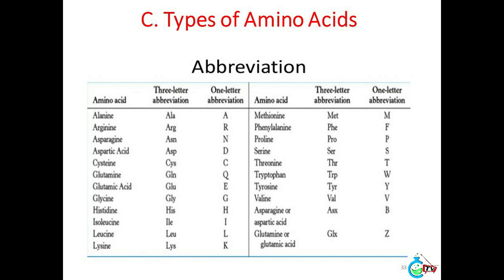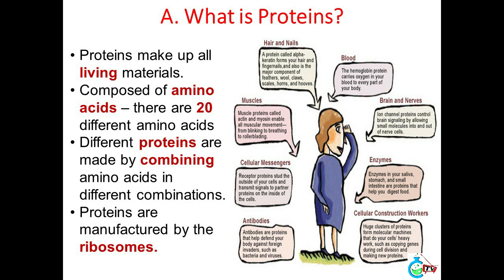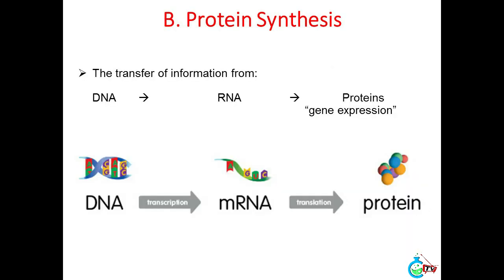C. Types of amino acids. 4. Proteins. A. What are proteins? Proteins make up all living materials and are composed of amino acids. There are 20 different amino acids; different proteins are made by combining amino acids in different combinations. Proteins are manufactured by the ribosomes.